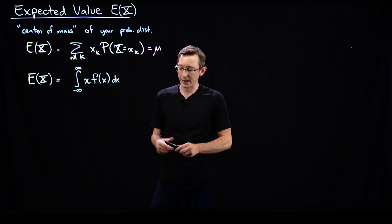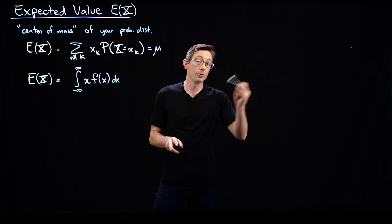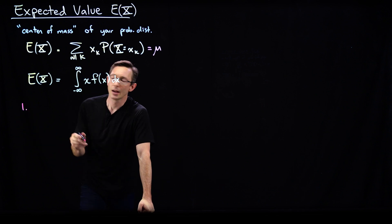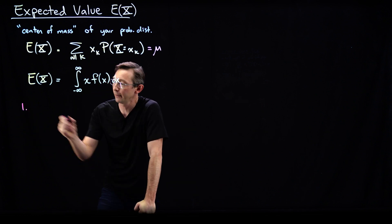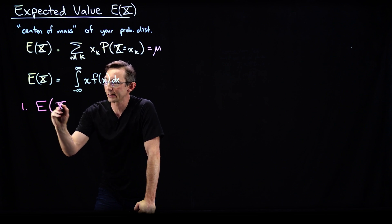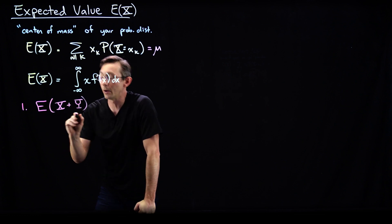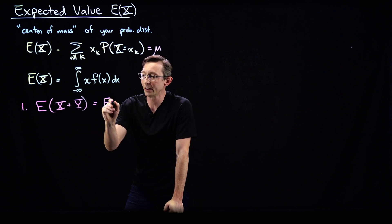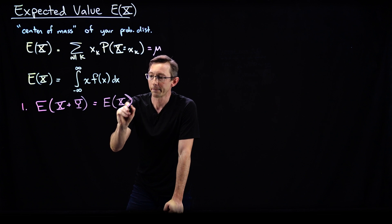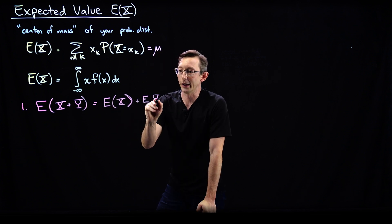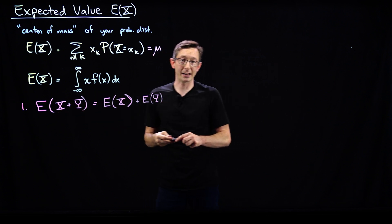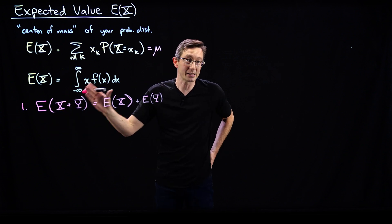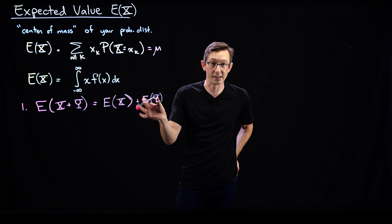The properties I'm going to show you — I'm going to state two of them and prove the third one. The first property, and this is maybe the most important property, is that if I have random variables x and y, then the expected value of x plus y — this new random variable x plus y — is simply the expected value of x plus the expected value of y. And this is true for any random variables x and y. They don't have to have the same distribution; they can be different.